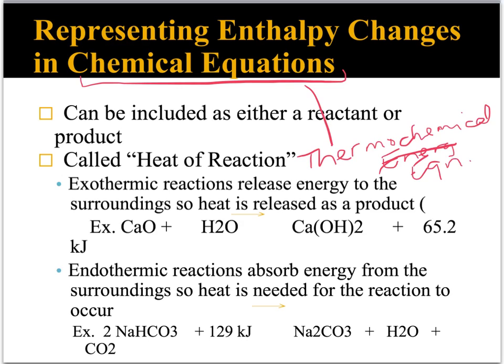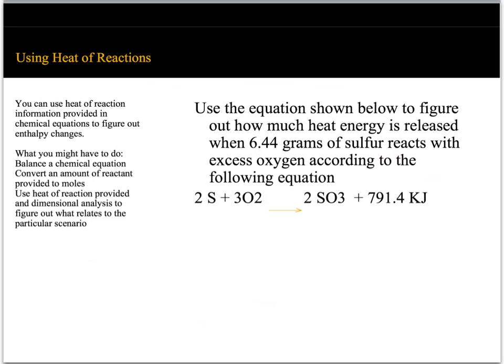Exothermic reactions release energy to the surroundings, so heat is released as a product. When representing an exothermic process, the heat of reaction appears as a product. Endothermic reactions absorb energy from the surroundings, so heat is needed for that reaction to actually occur — we represent heat of reaction as a reactant.